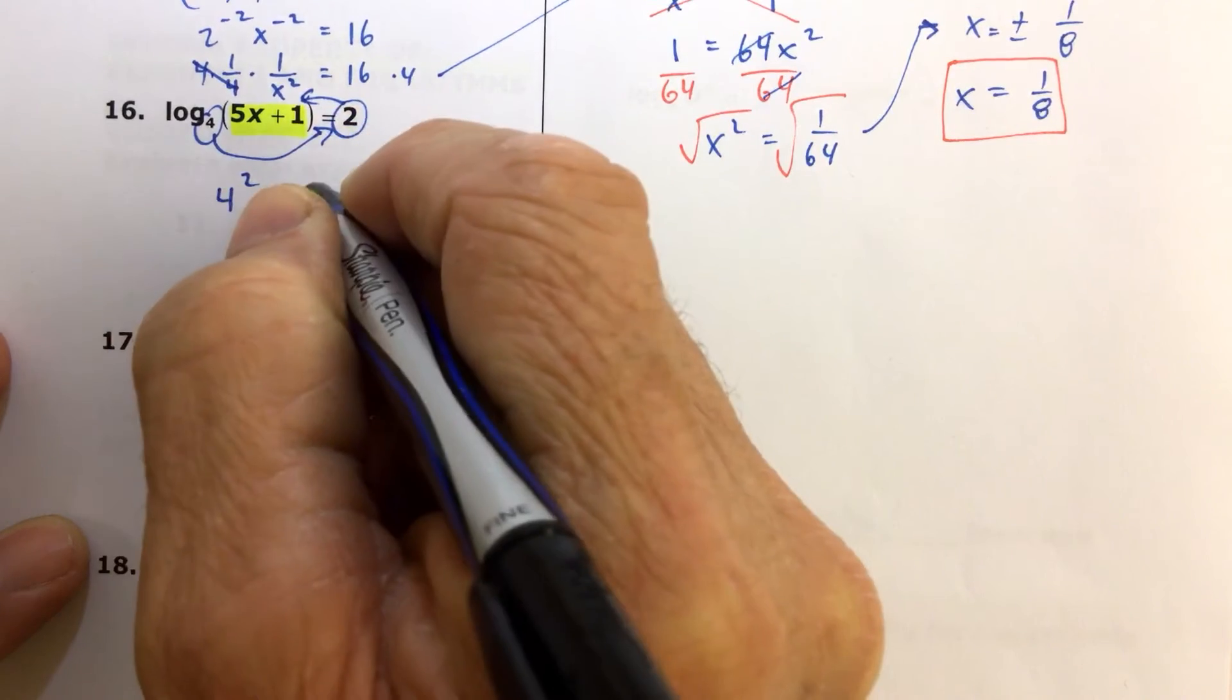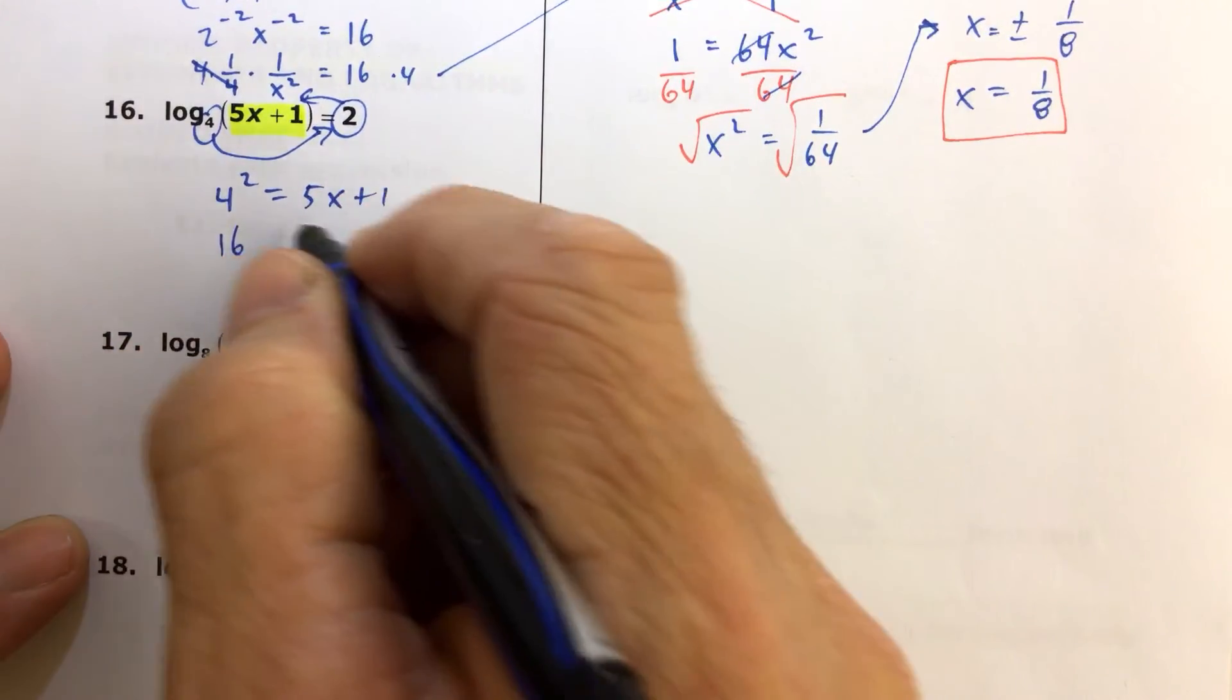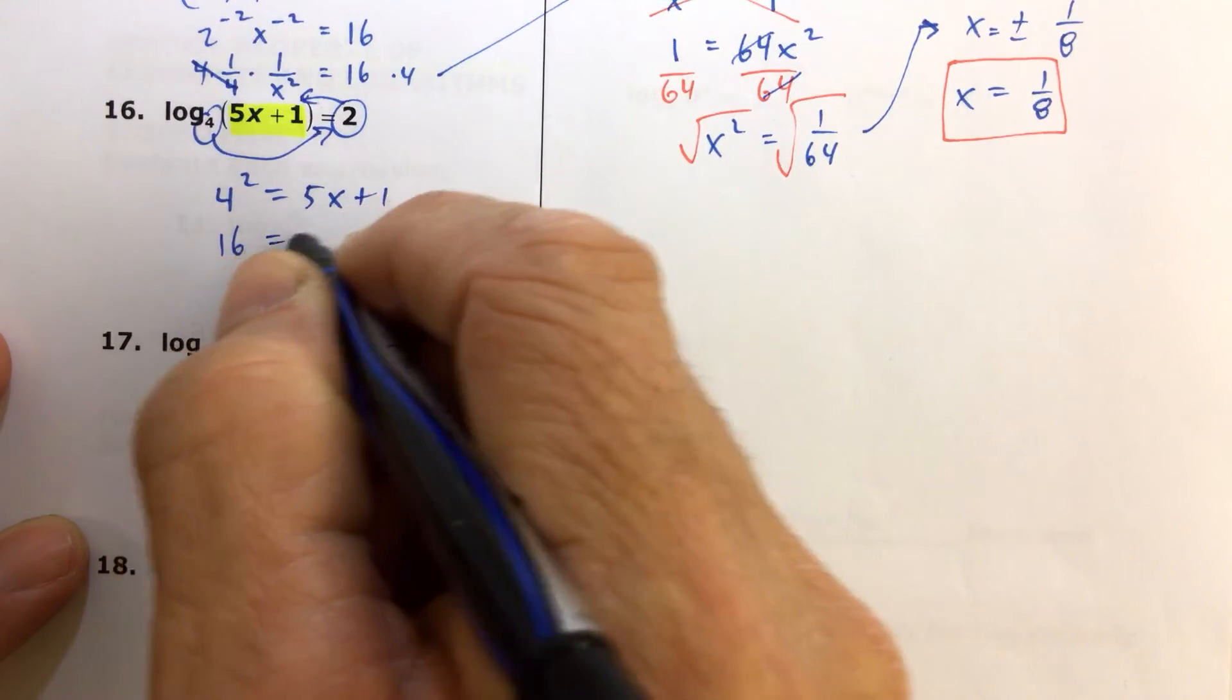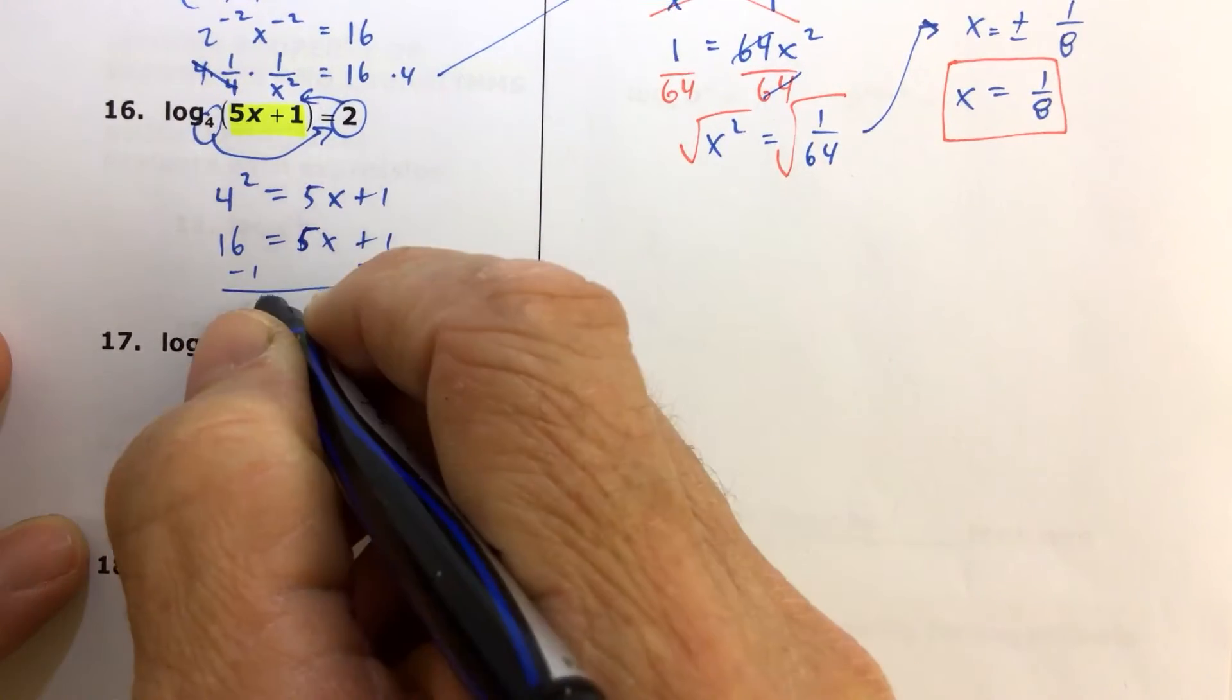We have 4 squared equals 5x plus 1. That's 16. We'll write it like this: 16 equals 5x plus 1. And subtracting 1 from both sides,